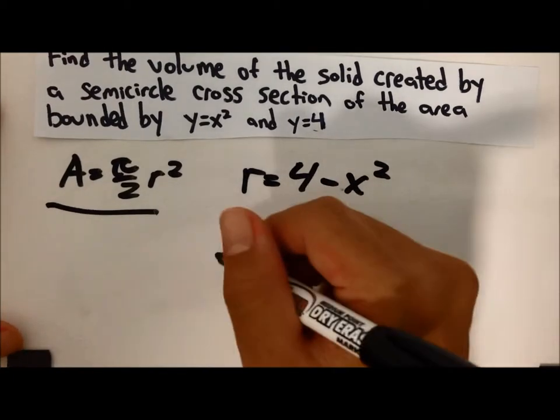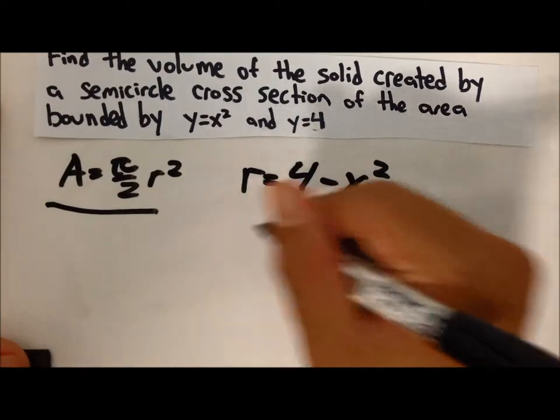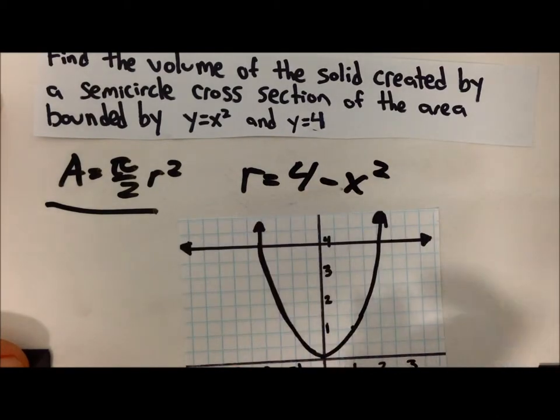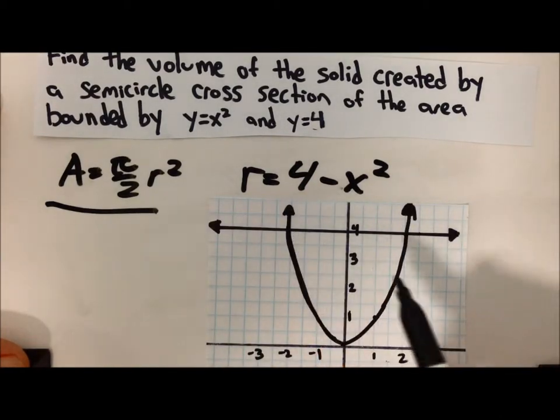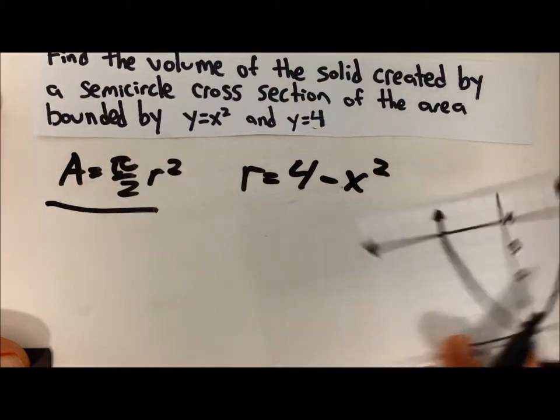And we need to use integration to solve this. So as we can see, the interception points are at negative 2 and 2, so that would be your limits for your intervals.